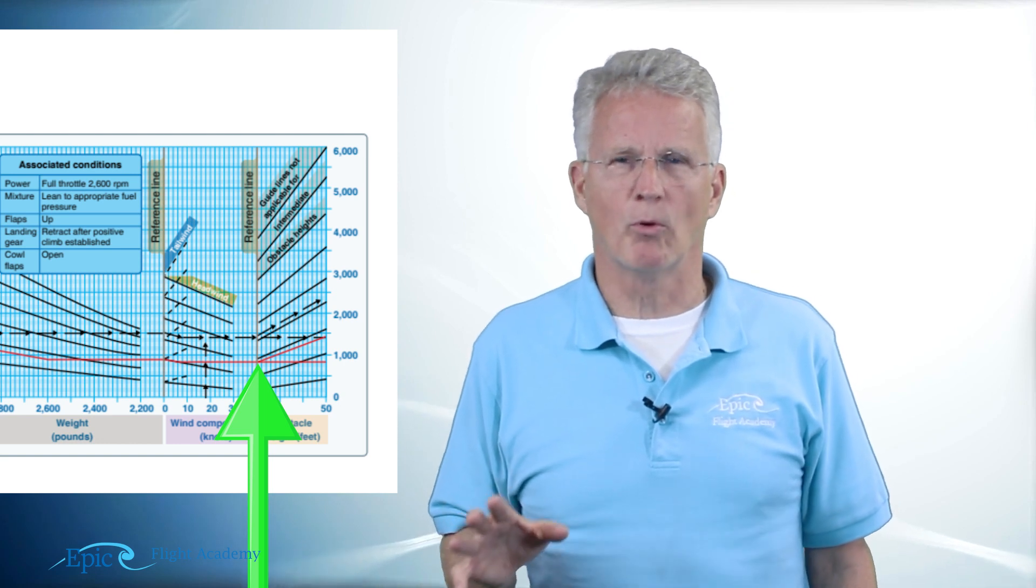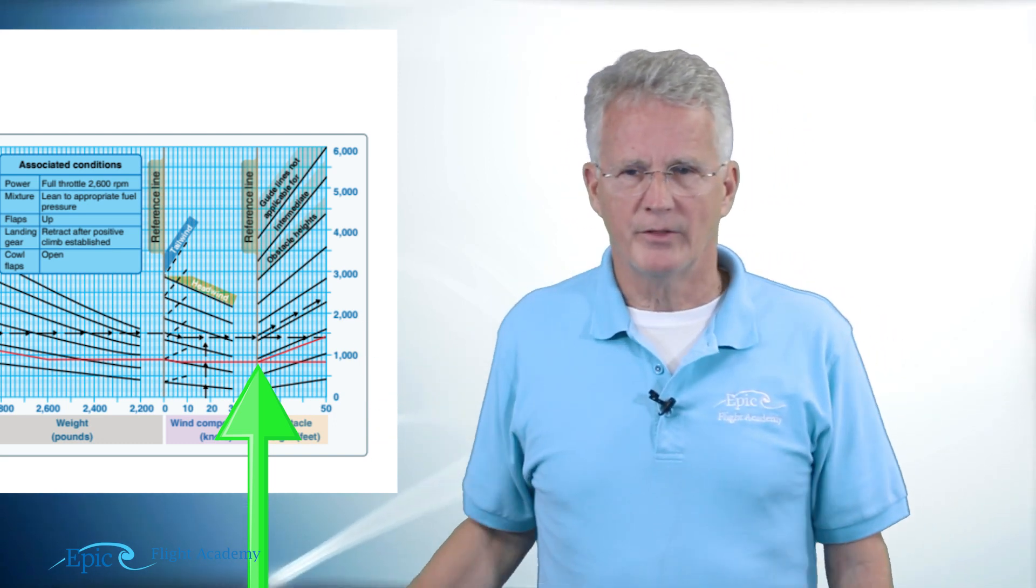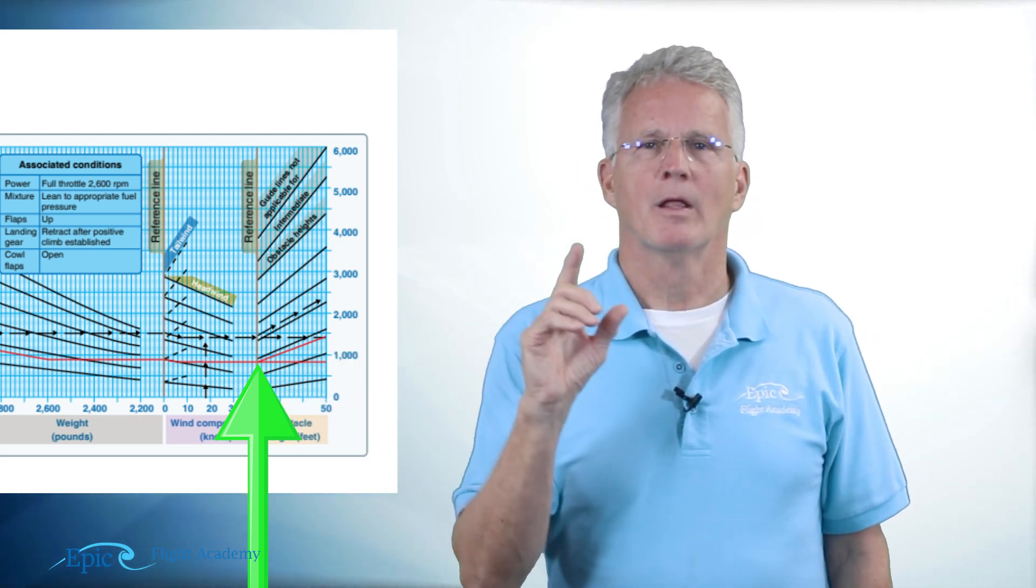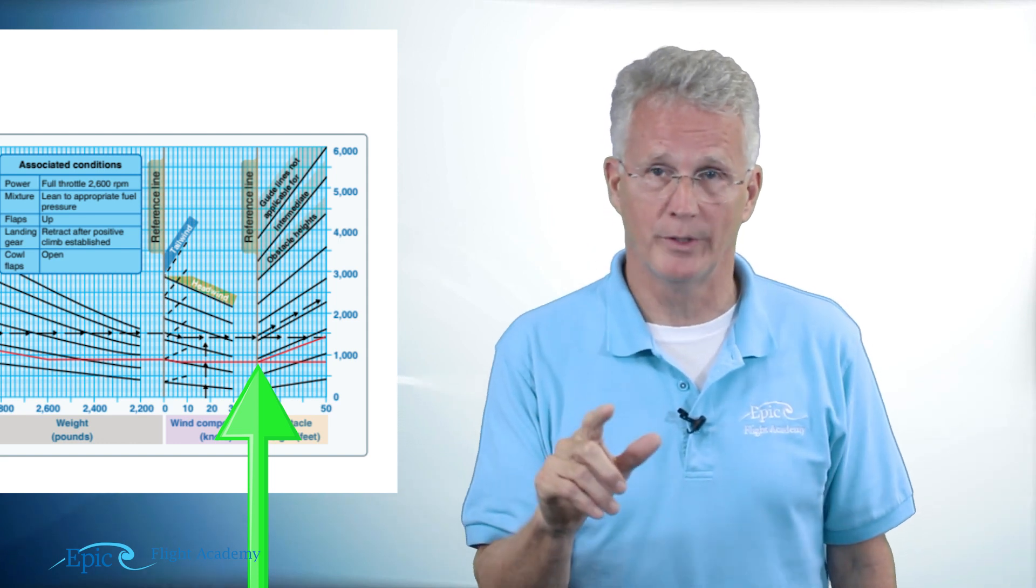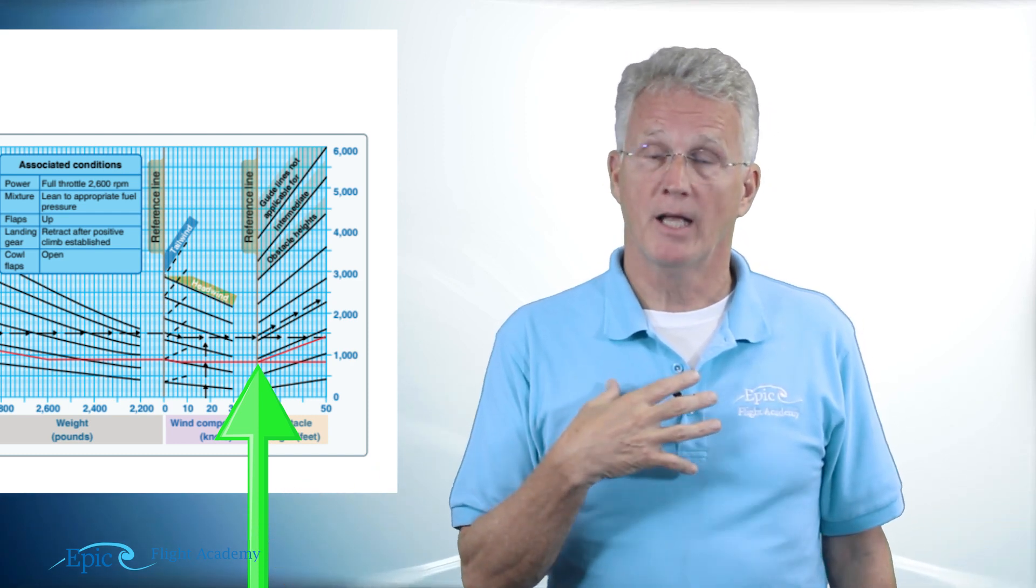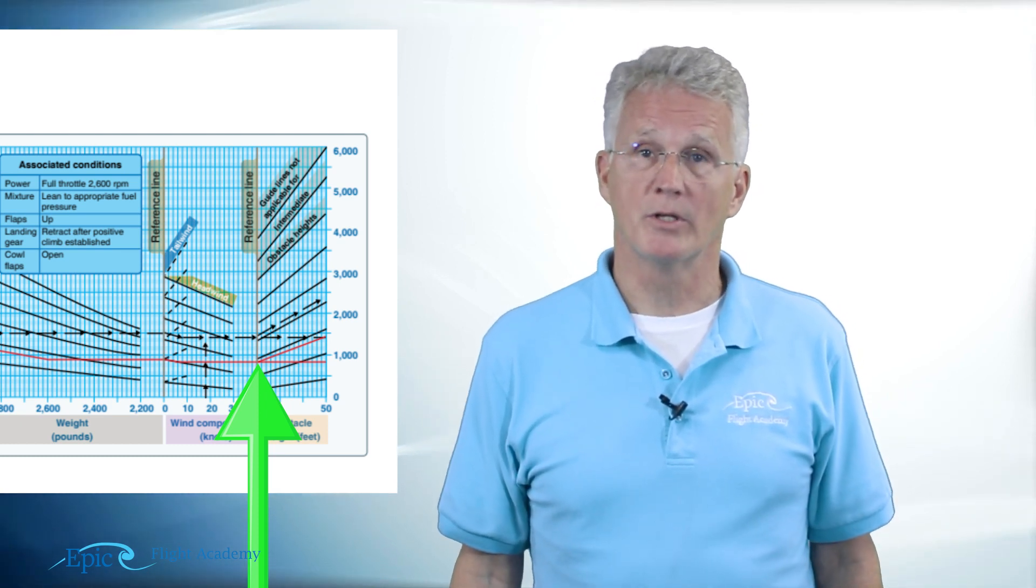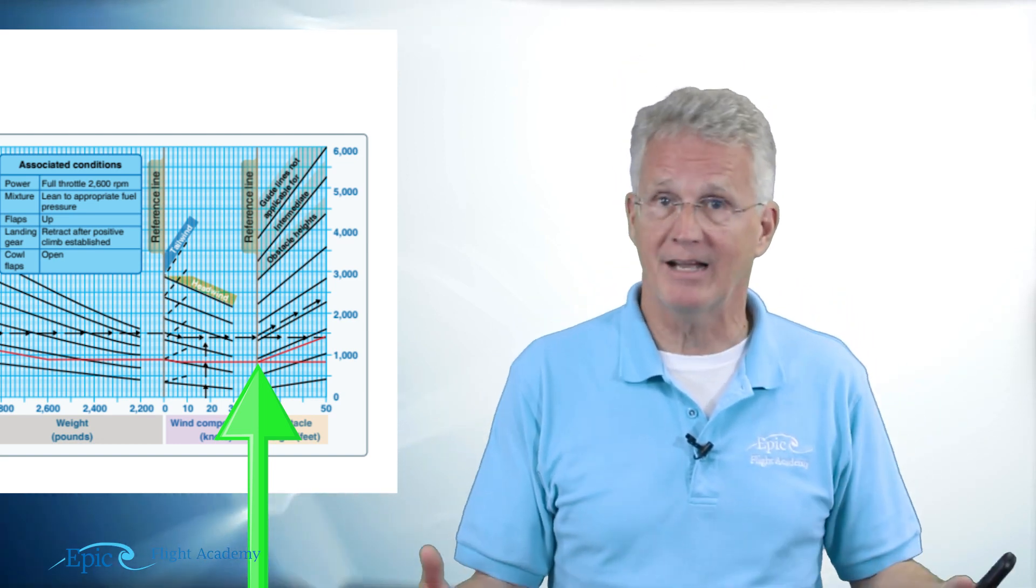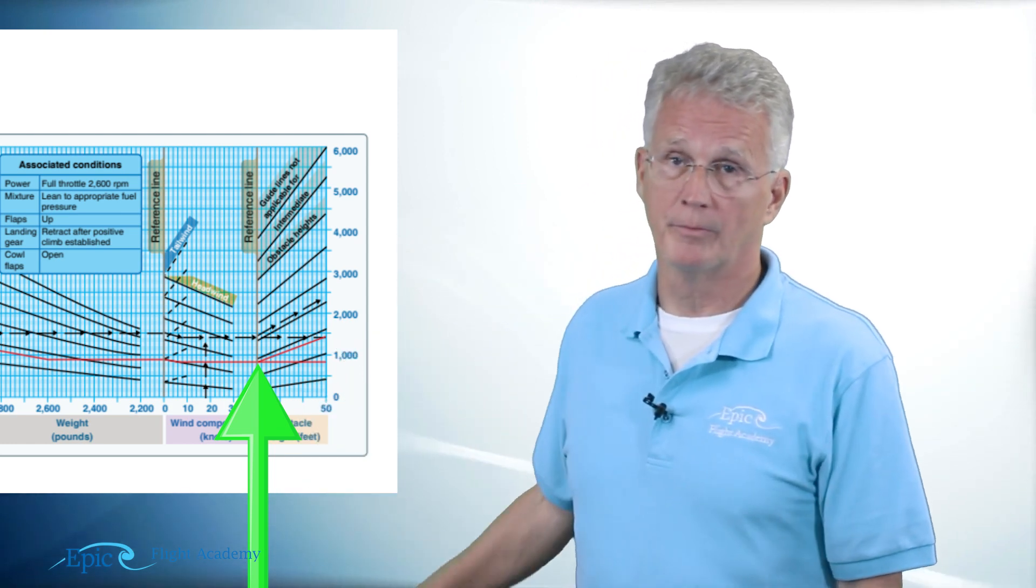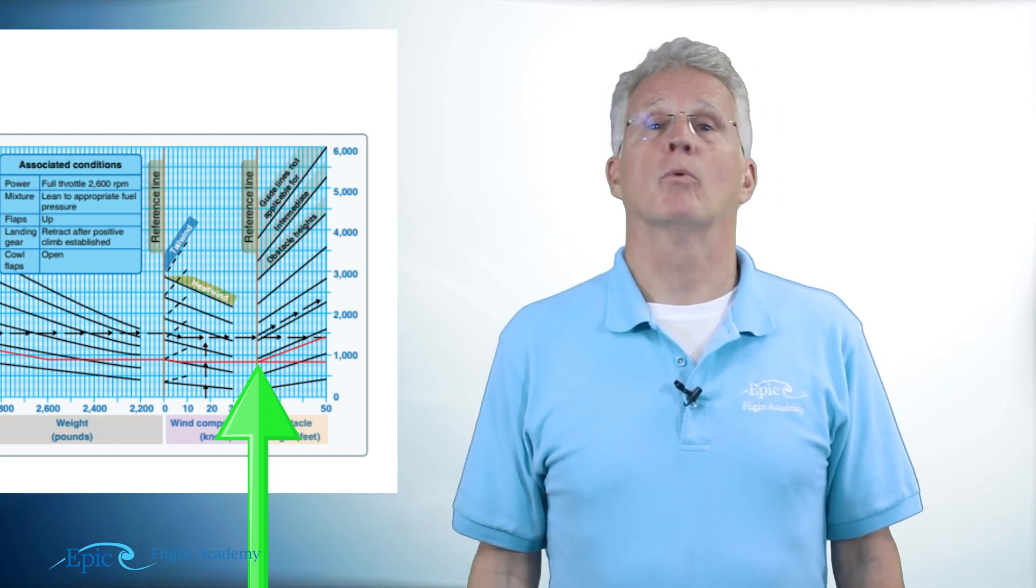Before we leave that wind portion of the chart notice the black slope lines are coming down for a headwind and there's that little dashed black line going up. Those are tailwinds. When would I ever take off with a tailwind? Well ordinarily if I had my choice I would not take off with a tailwind. There may be some special circumstances where I might have to take off with a tailwind. But you're correct, ordinarily if at all possible we are going to want to take off with a headwind.